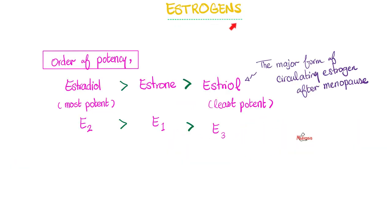How many estrogens do we have? We have many: estradiol, estrone, and estriol. Which one is the most potent? Estradiol, abbreviated as E2. Followed by estrone. The least potent of all three is estriol. Why do we call estrone E1? Because it's the first one to be made — that's why it's called E1.